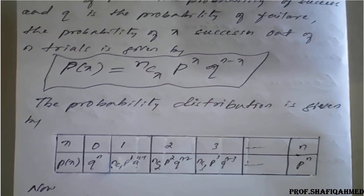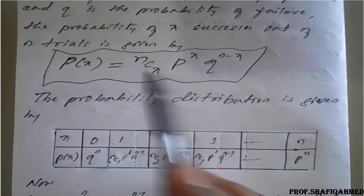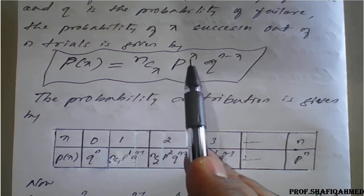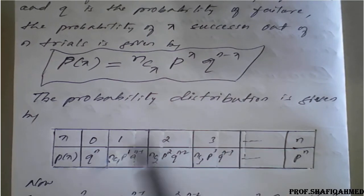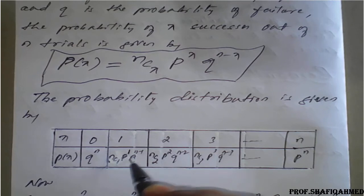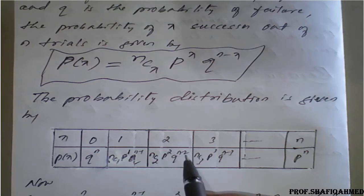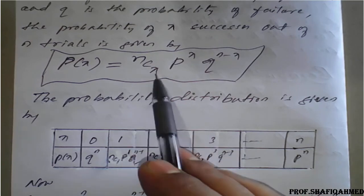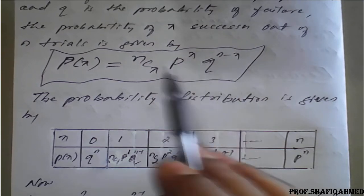The probability distribution is given as follows: when X = 0, NC0 is 1, P raised to 0 is 1, Q raised to N minus 0 becomes Q raised to N. When X = 1, NC1 times P raised to 1 times Q raised to N minus 1. Similarly, when X = 2: NC2 times P squared times Q raised to N minus 2; when X = 3: NC3 times P cubed times Q raised to N minus 3, and so on. When X = N: NCN is 1, P raised to N, and Q raised to N minus N is Q raised to 0, which is 1, giving P raised to N.